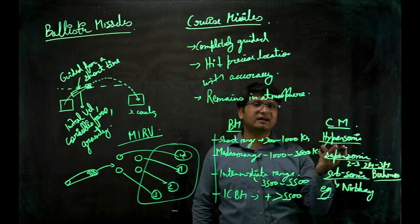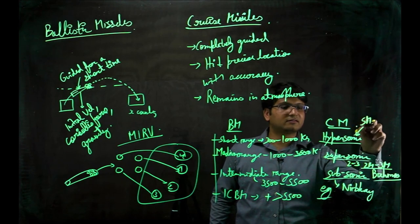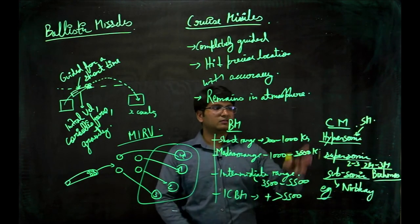Hypersonic missiles travel at the speed of 5 times that of sound, so 5 Mach. These are the types of cruise missiles and ballistic missiles.